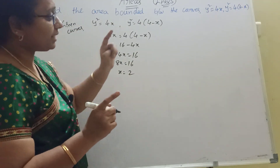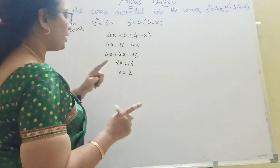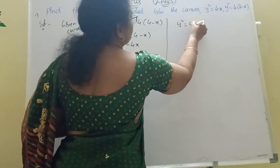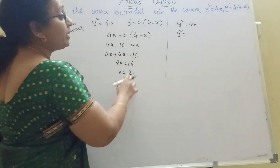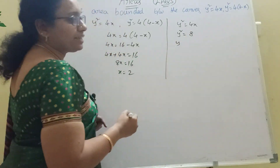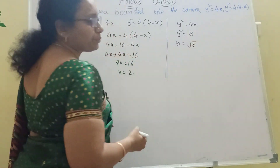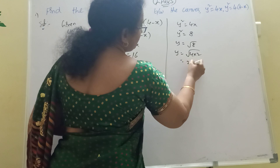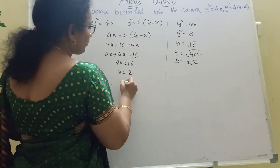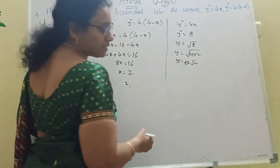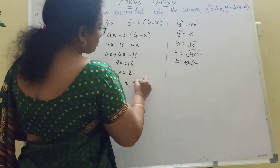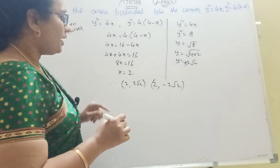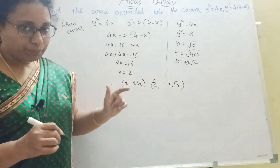Therefore x equal to 2. Substituting x equal to 2 into y squared equal to 4x gives y squared equal to 8, so y equal to plus or minus 2 root 2. The intersection points are at x equal to 2, y equal to plus 2 root 2, and y equal to minus 2 root 2.